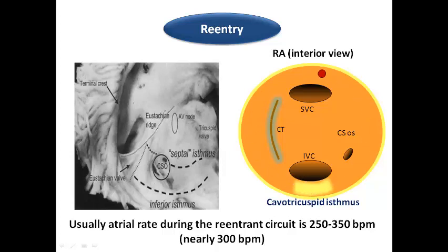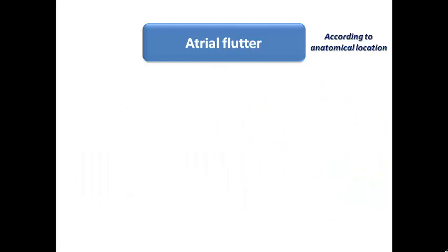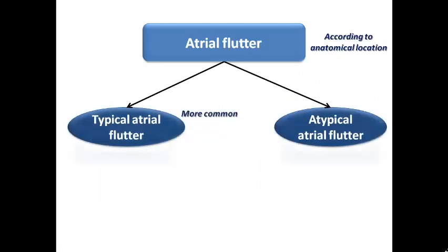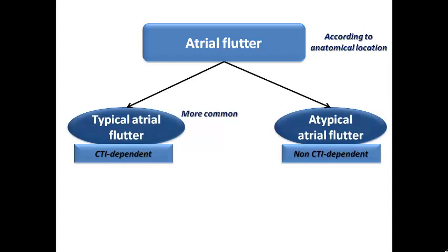Usually the atrial rate during this re-entrant circuit is 250 to 350 beats per minute, so as an approximation the atrial rate in flutter is nearly 300 beats per minute — keep this number in mind as it will help in diagnosis. If we divide atrial flutter according to anatomical location, we can divide it into typical atrial flutter and atypical atrial flutter.